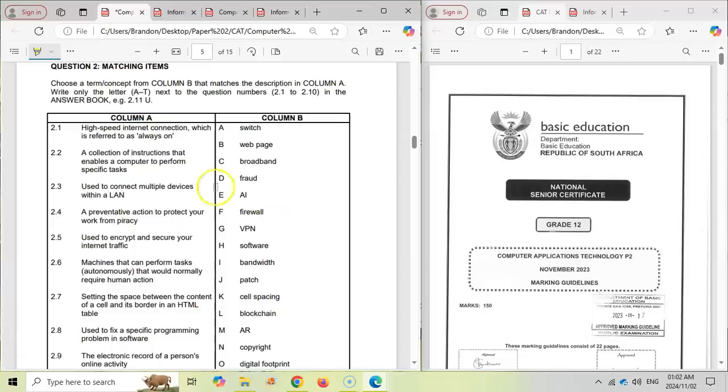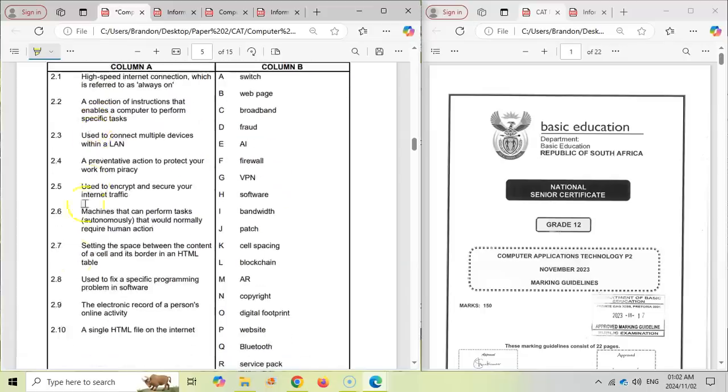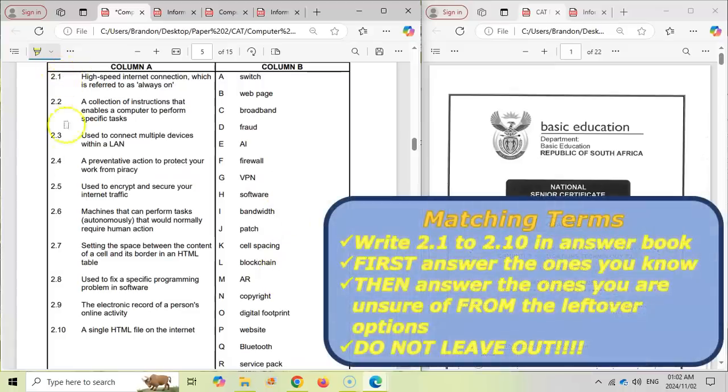One thing that some people tend to do wrong is they go from the first question to the last question answering them in order. I would mark off all the numbers in your exam paper. If you don't know an answer, let's say I look at this question and I don't know which one it is. Don't fill it in. Leave it out for now and move to the next one.